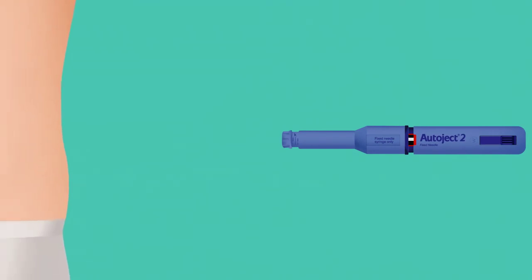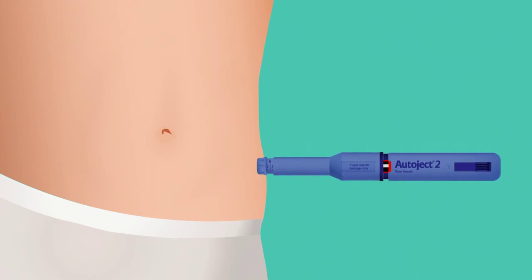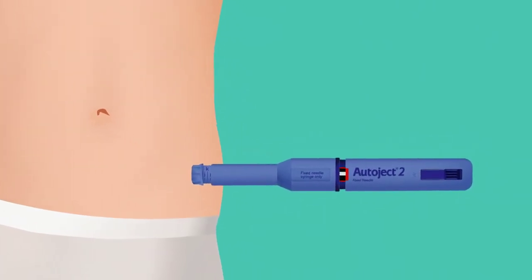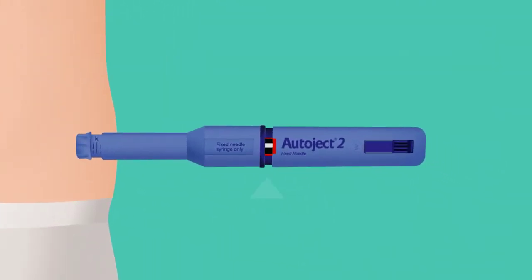Select your site for the injection and place the Autoject against the skin. Gently press the end of the device so the injector body moves towards the syringe housing until the red indicator disappears. This will release the safety lock so the device can be activated.